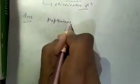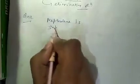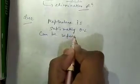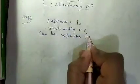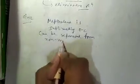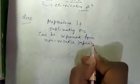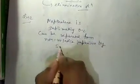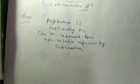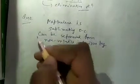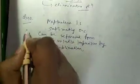In question number 42, impure naphthalene is to be purified. Naphthalene is a sublimating organic compound and can be separated from non-volatile impurities by sublimation. So question number 42 option D is correct.